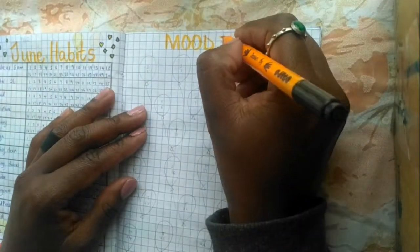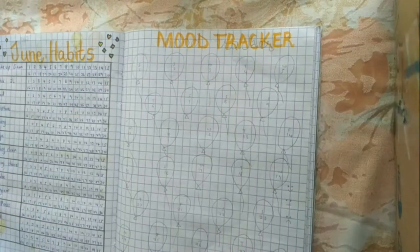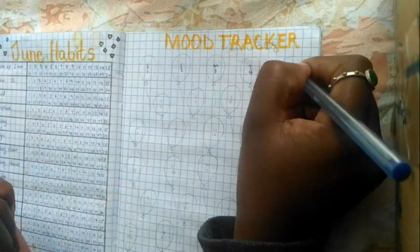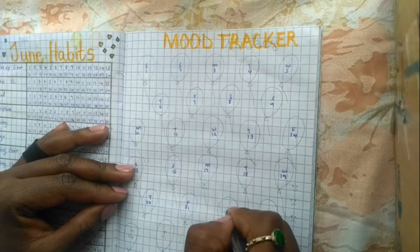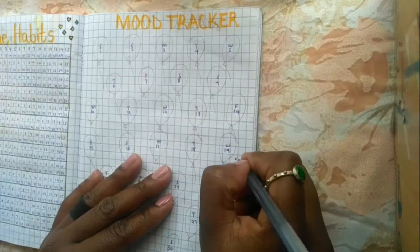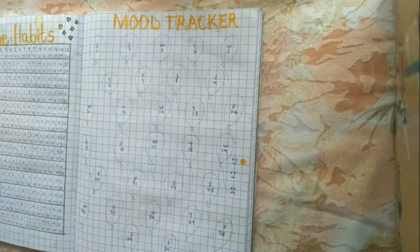For my mood tracker, I just have my title and my balloon date placemarks and legends. Something super simple. I will enjoy seeing the colors pop from this one at the end of it. I just can't wait to see the end result.